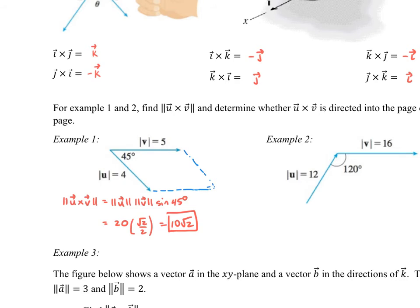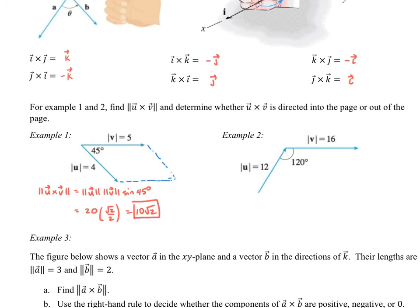Then it asks us to figure out whether the resultant vector from the cross product is pointing into the page or out of the page. Your goal is to line your hand so your fingers are in the direction of the first vector U, and curl them towards V. If you can successfully do that, you'll find that your thumb will point right out of the page — meaning it's coming back at you. So our answer is that it's going to be out of the page.